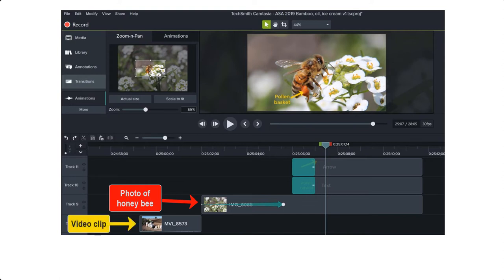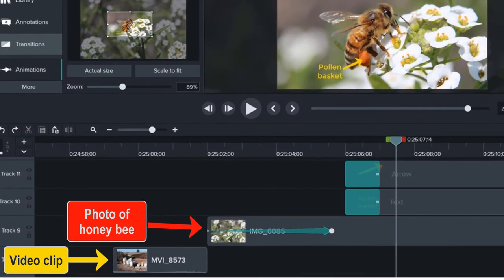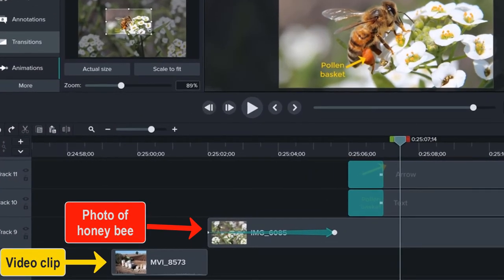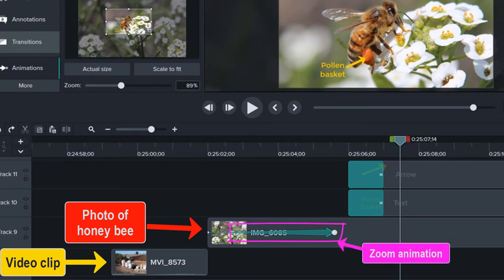You might also have some short video clips that demonstrate something about your research that you could add. Then you can add some basic animations like zooming into a photograph or adding labels or arrows to highlight different things.